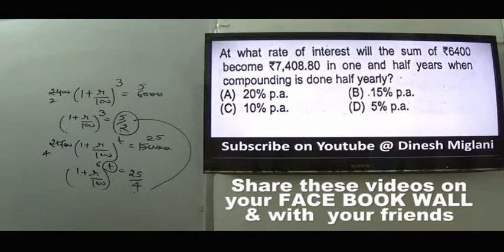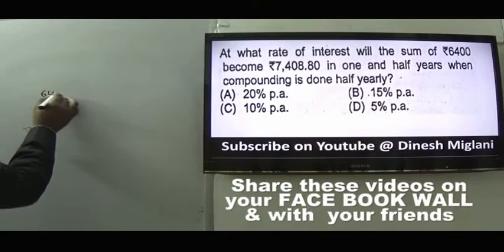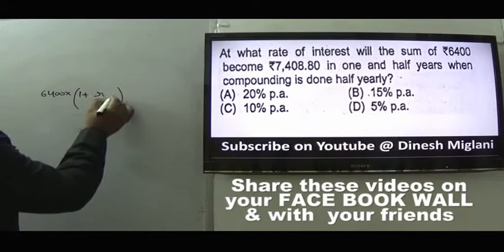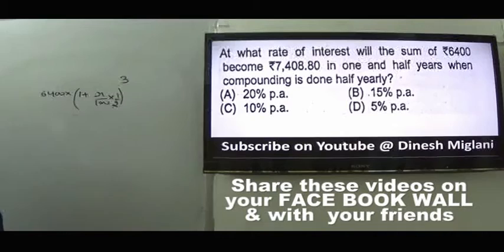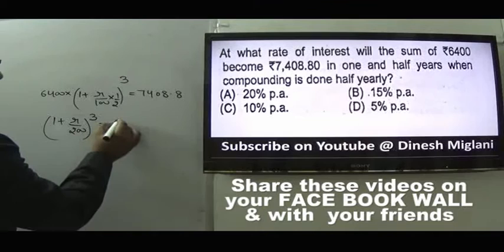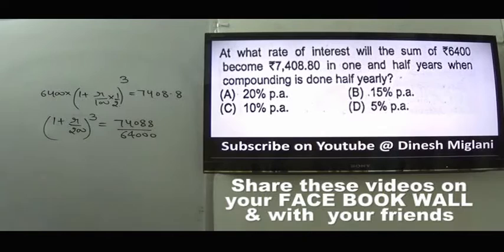Question 2: At what rate of interest will a sum of 6400 become 7408 in one and a half years when compounding is done half-yearly? Since interest is compounded half-yearly, the rate is halved and time is doubled, giving three compounding periods. So 6400 × (1 + r/200)³ = 7408. Simplifying, (1 + r/200)³ = 7408/6400, and cancelling common factors gives (21/20)³.